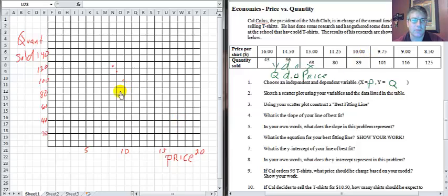Ten dollars eighty nine shirts, just about ninety shirts right there. Eleven dollars and twenty five cents, eighty shirts. Thirteen dollars sixty eight shirts, almost seventy shirts, right about there. Fourteen fifty, fifty six shirts, right there. And sixteen dollars is forty five shirts, right there. So that is our scatter plot, those are our data points.